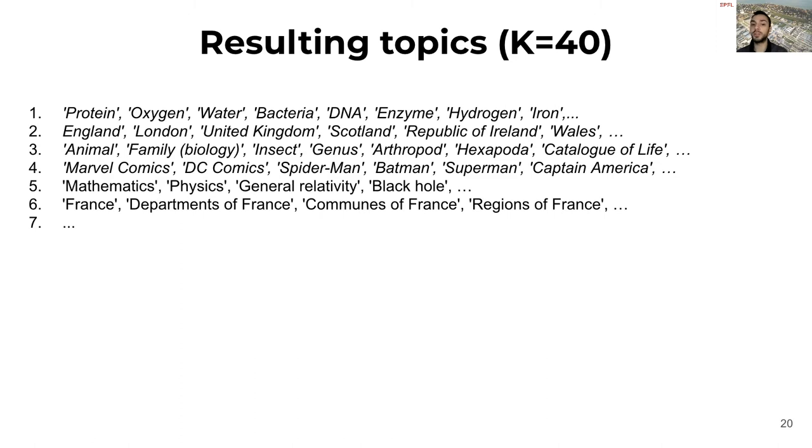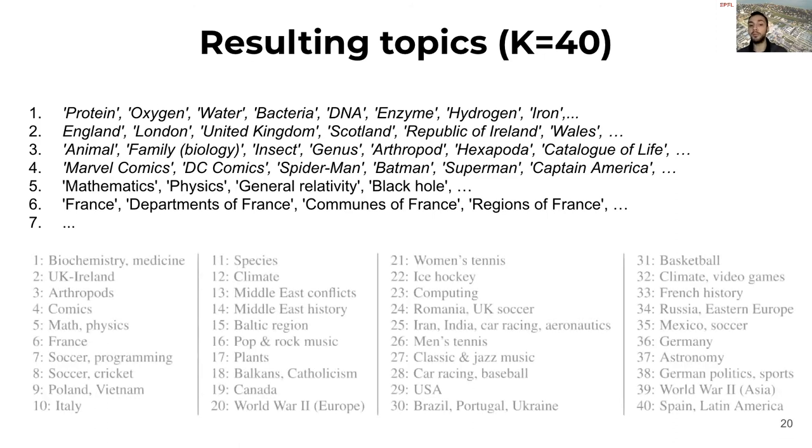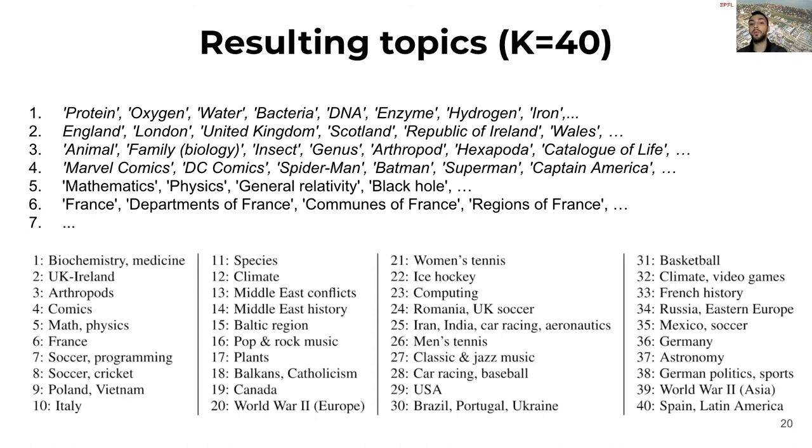We can recognize topics associated with biochemistry, medicine, UK and Ireland, biology, and so on. In the case of the model with 40 topics, we assign some labels by manually inspecting the top 100 entities for each topic, and we found geographical content, history, science, and sport. But how can we systematically evaluate these models?